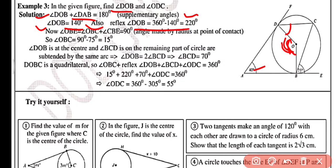The reflex angle of DOB equals 360 minus angle DOB = 360 minus 140 = 220 degrees. Now angle OBE has two parts: OBC plus CBE equals 90 degrees, since the radius is perpendicular to the tangent at the point of contact.